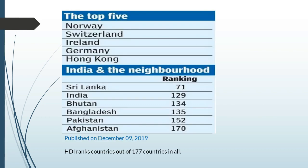From the 2019 HDI report, here are the top five countries in HDI ranking out of 177 countries: Norway, Switzerland, Ireland, Germany, and Hong Kong. Among India and its neighboring countries, Sri Lanka — a small island country — ranks 71st. India, the seventh largest country in the world, ranks 129th. Bhutan is 134th, Bangladesh 135th, Pakistan 152nd, and Afghanistan 170th.